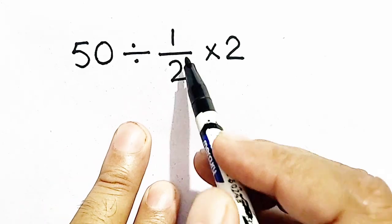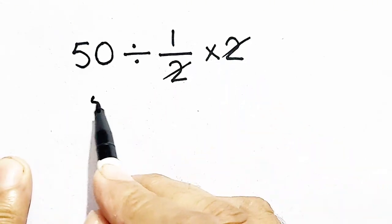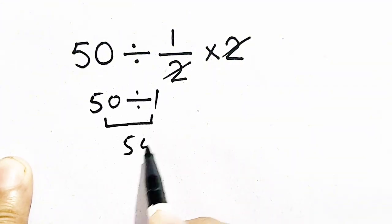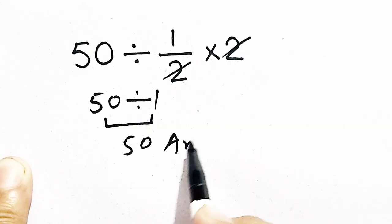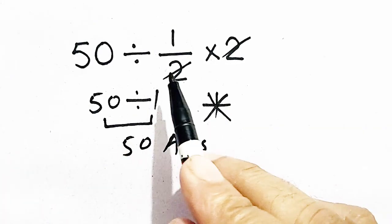Mostly people will do a mistake that they cancel 2 and 2 and they get 50 divided by 1, which will be equal to 50. And 50 will be their answer, but it is not correct because they didn't follow the order of operation.